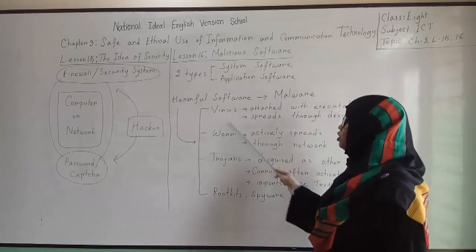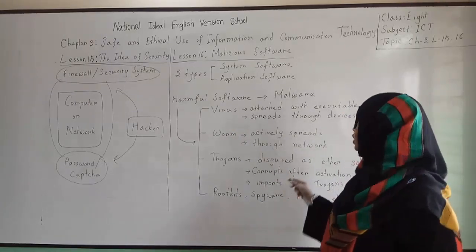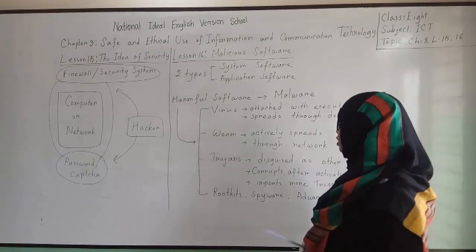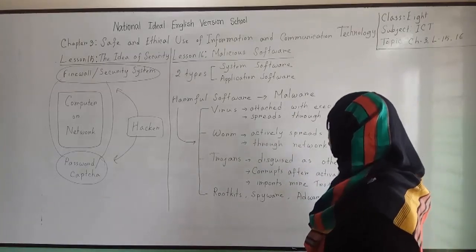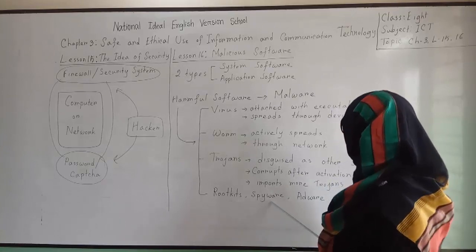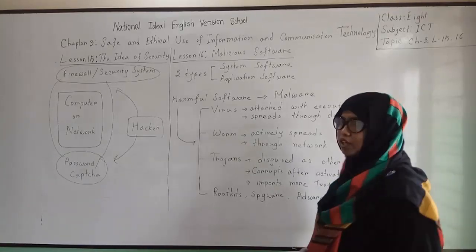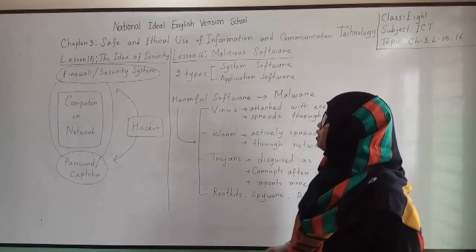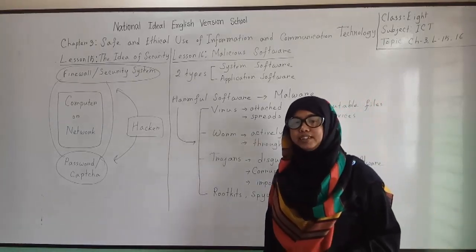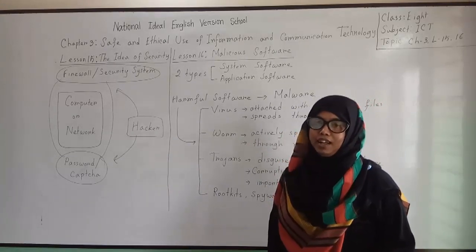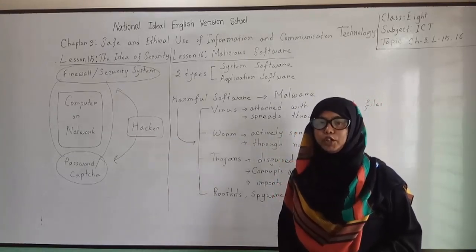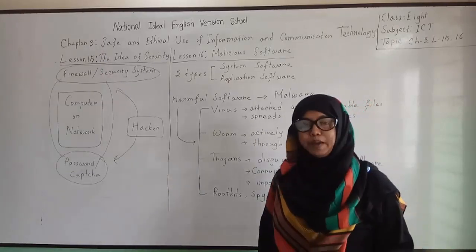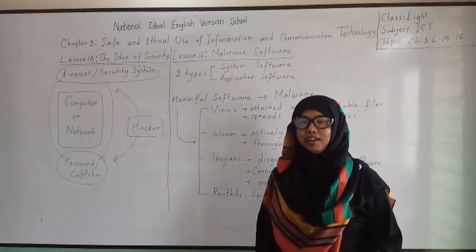So those were the most common forms of harmful software or malware found in computers. There are also other types of harmful software such as rootkit, spyware, or adware — they also try to harm your system in different ways. This was today's lesson. I hope you understood today's discussion, and I hope that you will study more at home. Listen to your parents. See you next time. Allah bless. Thank you.